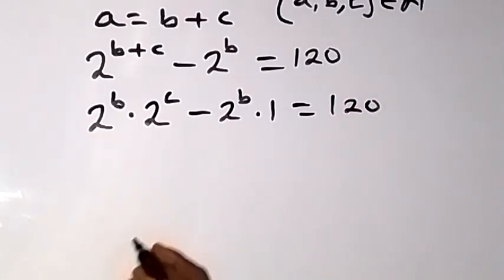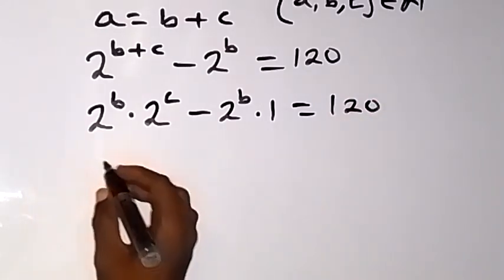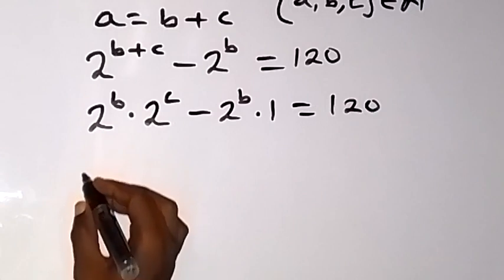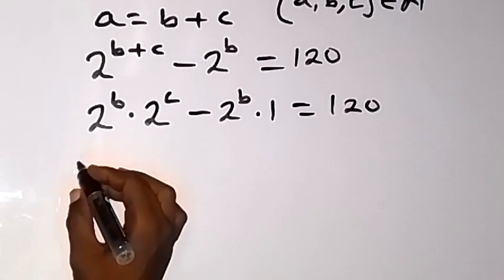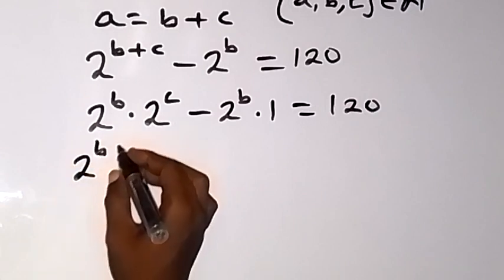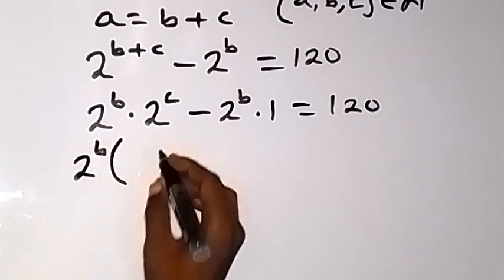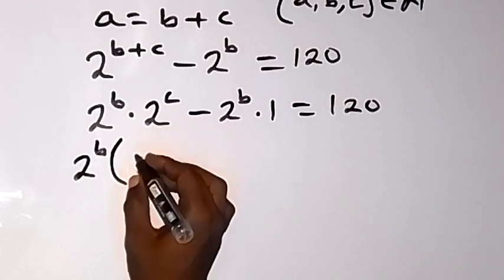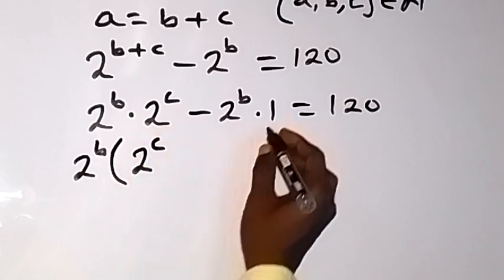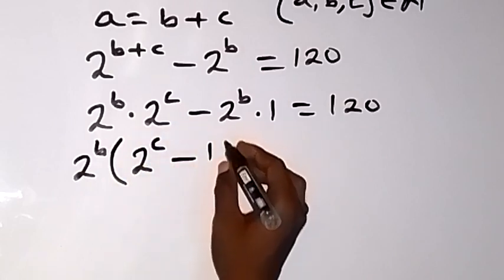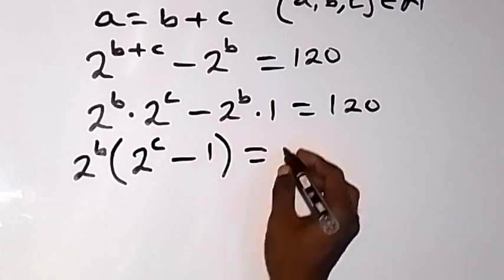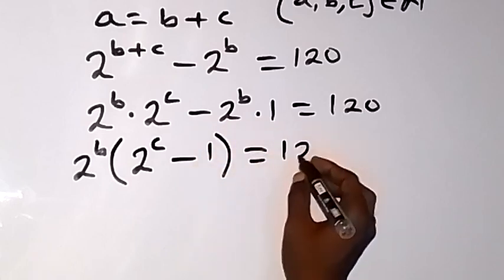So we factor out 2 raised to power b, and we are left with 2 raised to power c minus 1, equals 120.